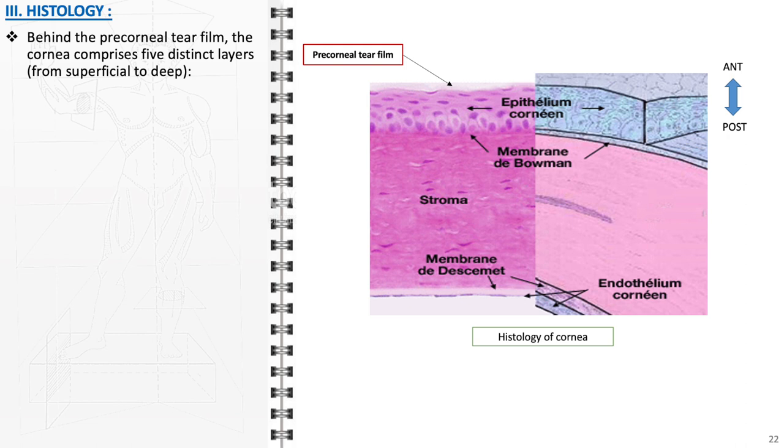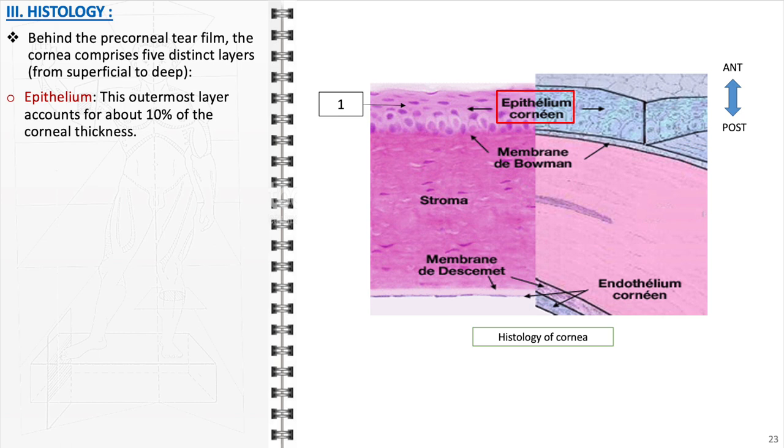Concerning the histology of the cornea, it is composed of five distinct layers, each with specific characteristics and functions, situated behind the precorneal tear film. The epithelium, serving as the outermost layer of the cornea, constitutes about 10% of its total thickness. It is a multilayered, non-keratinized, stratified squamous epithelium that serves as the primary defense against environmental damage. Its regenerative capacity allows for quick healing from minor injuries.